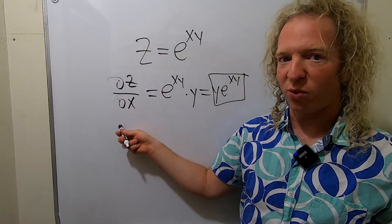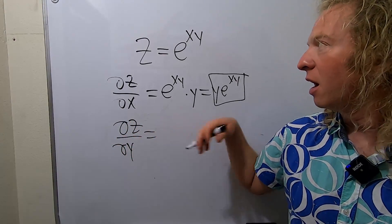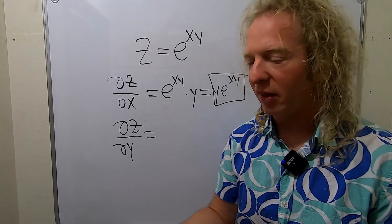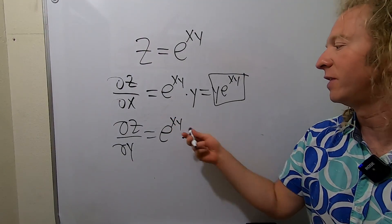Let's do the partial with respect to y. So ∂z/∂y. Again, the derivative of e^x is e^x, so we get e^(xy). And then by chain rule, times the derivative of the inside.